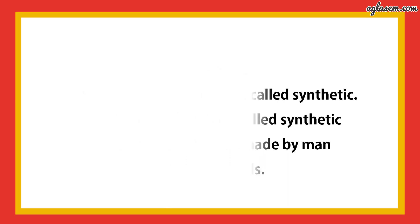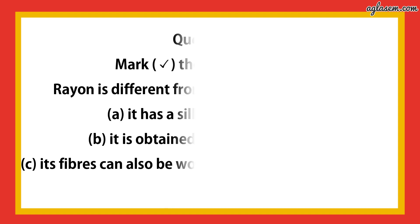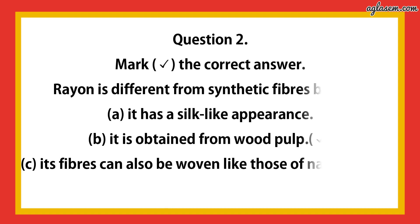Question number 2 says: rayon is different from synthetic fiber because — part 1: it has a silk-like appearance; part 2: it is obtained from wood pulp; part 3: its fibers can also be woven like those of natural fibers. The answer is B: it is obtained from wood pulp.